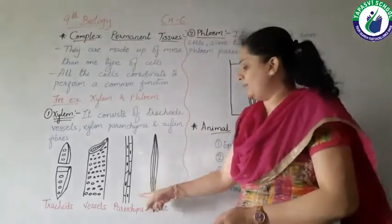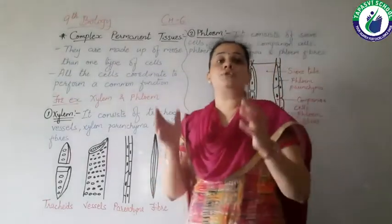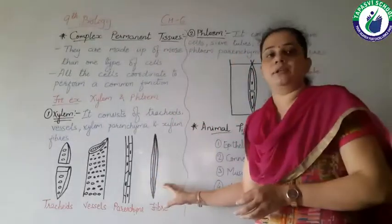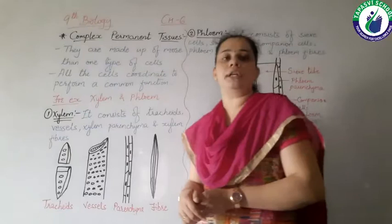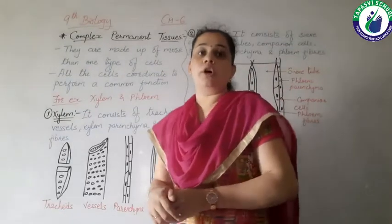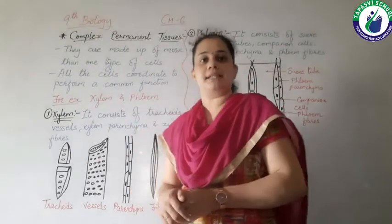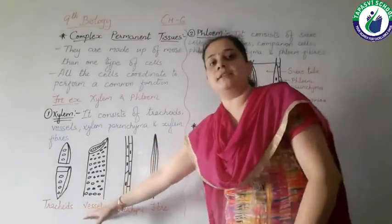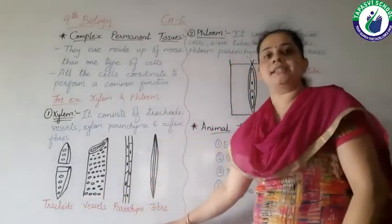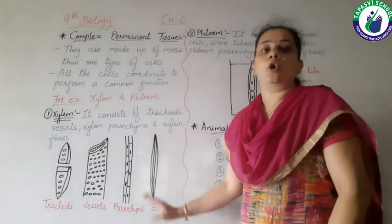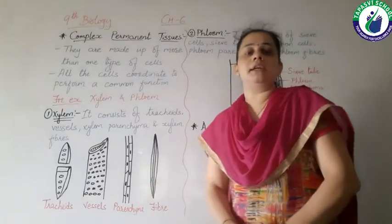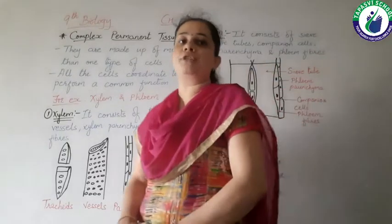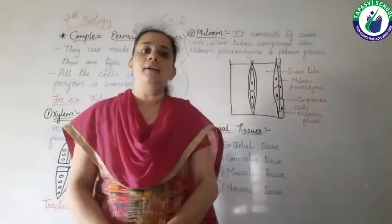Xylem parenchyma has the function to store food, and xylem fibers are generally the supportive cells. All these cells — tracheids, vessels, xylem parenchyma and xylem fibers — coordinate between each other and perform the common function of transporting water and minerals.